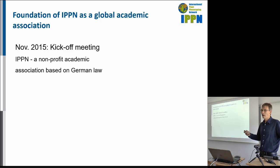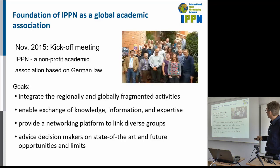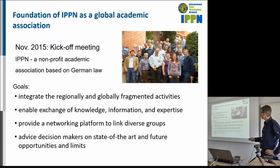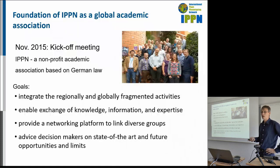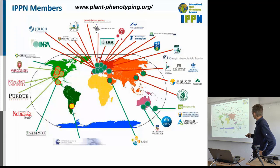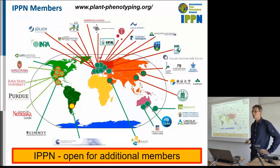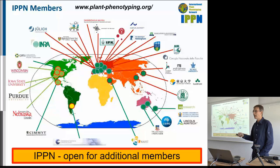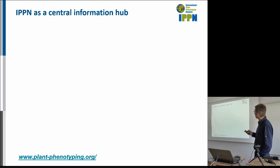The goals of IPPN are to integrate regionally and globally fragmented activities, enable exchange of knowledge and information, provide networking platforms to link diverse groups, and advise decision makers about the state-of-the-art, future opportunities, and limits of plant phenotyping. We currently have over 30 IPPN members — membership is institutional — and it is still growing. IPPN is open for new members; you are welcome to join anytime. You can ask me or Carol, who is also in the room, or anyone from Jülich.